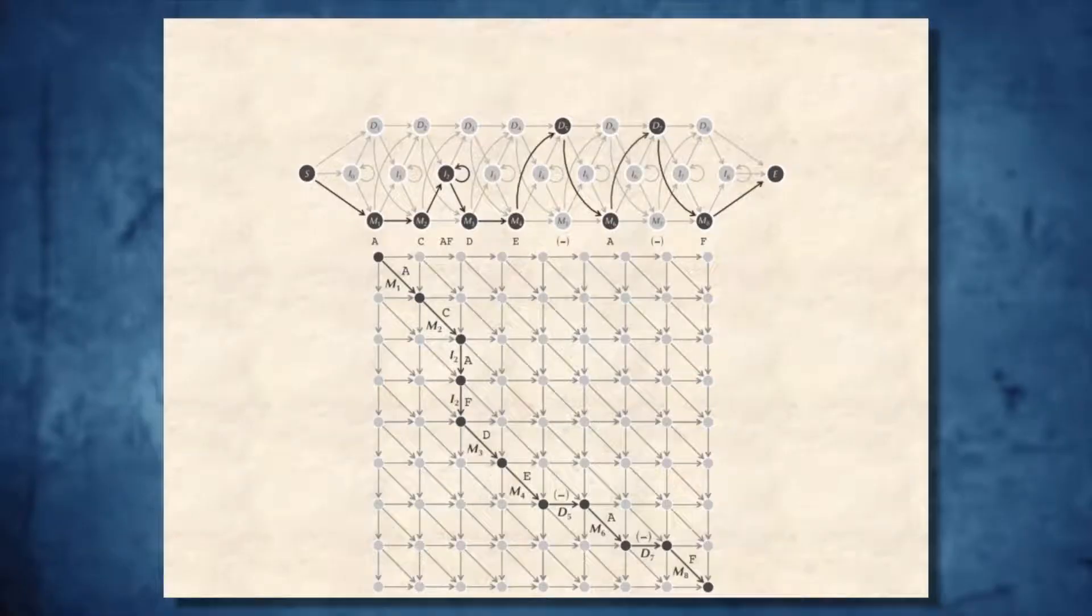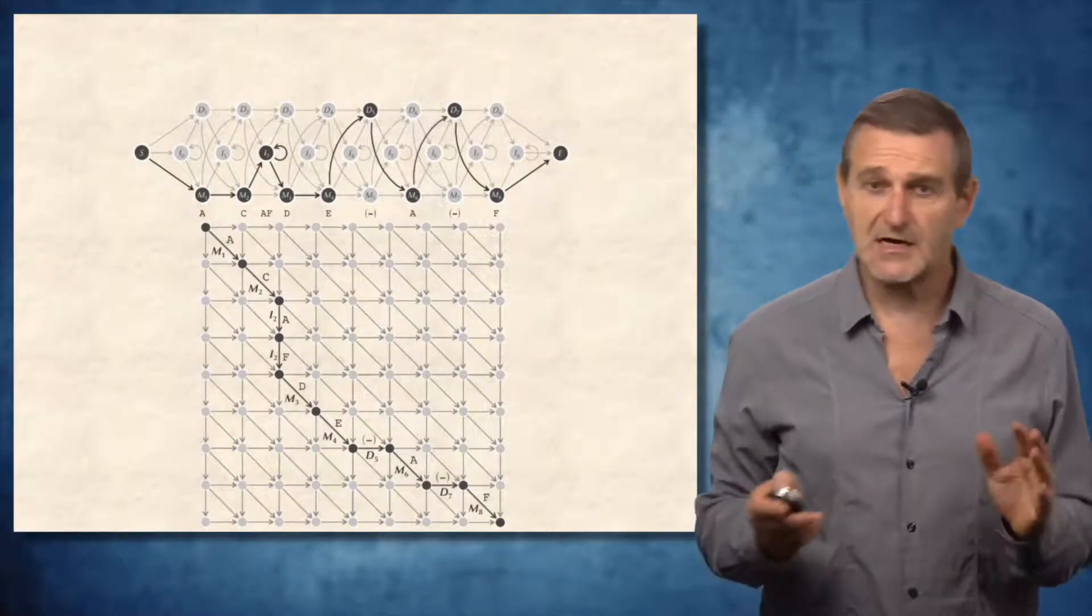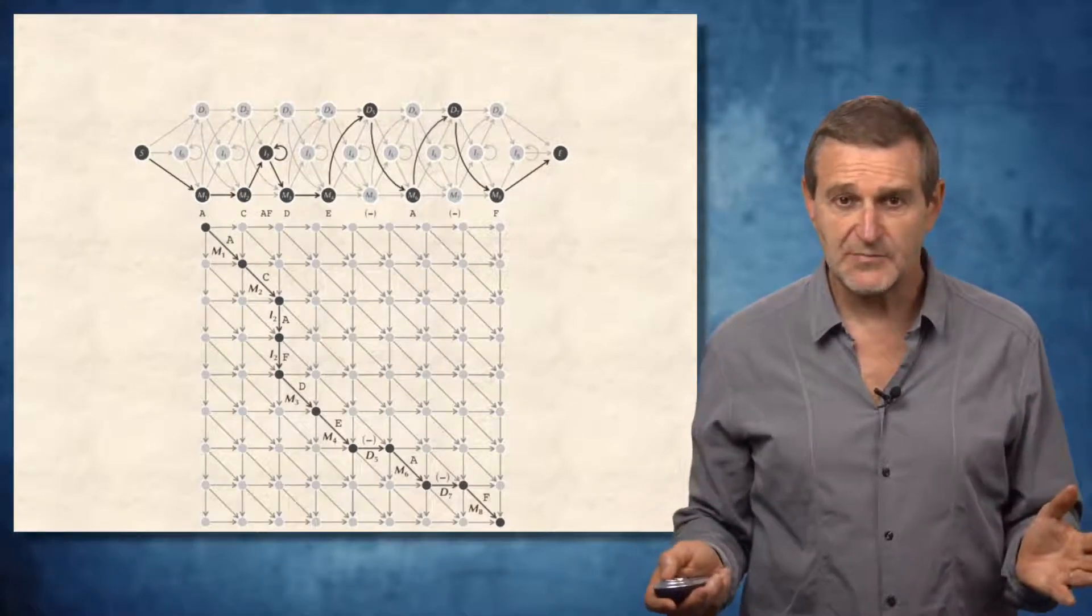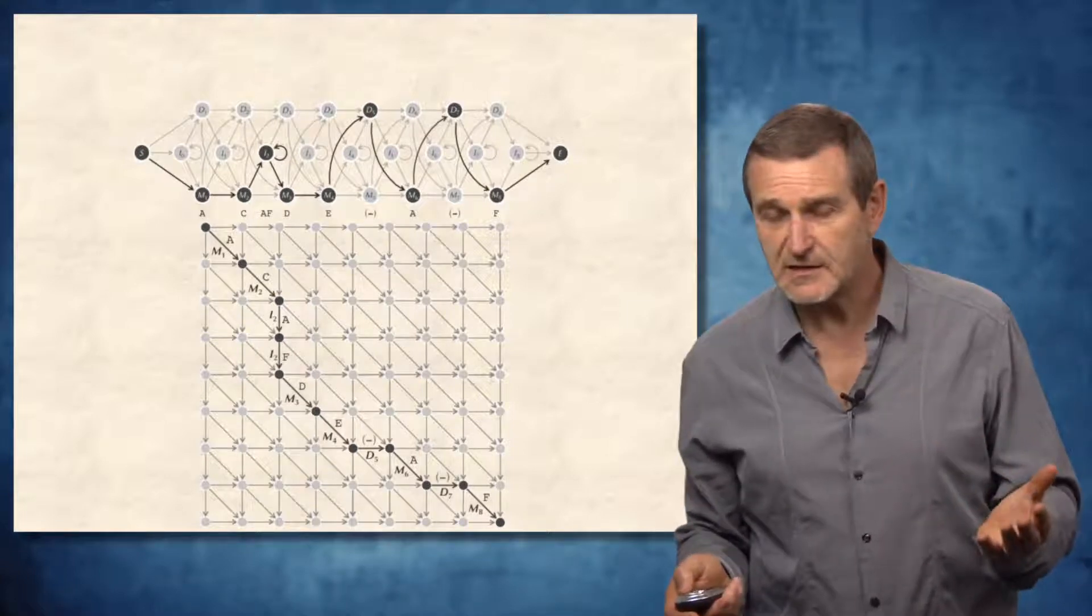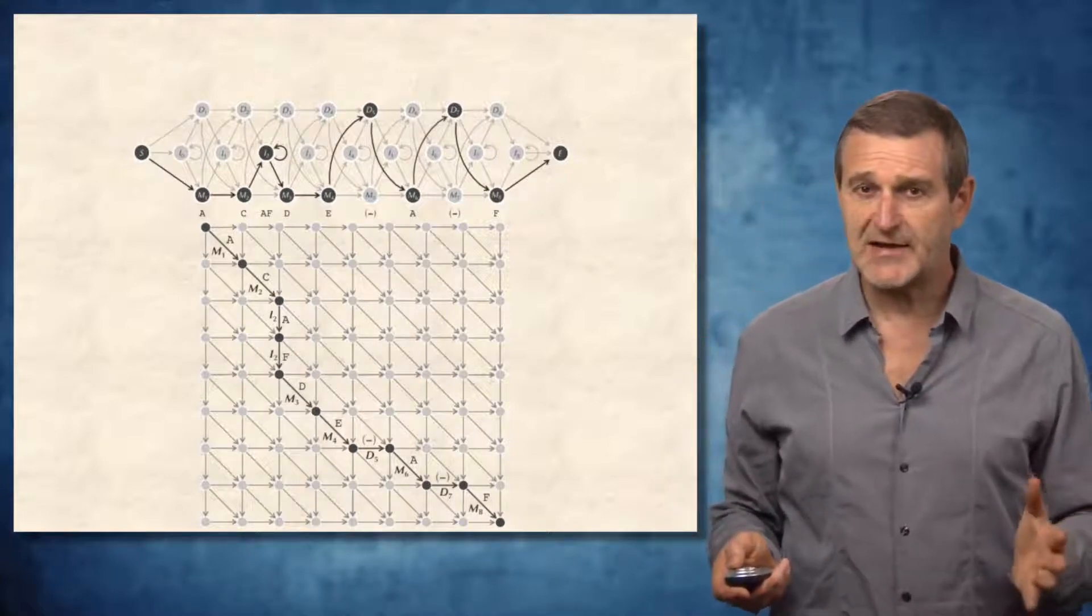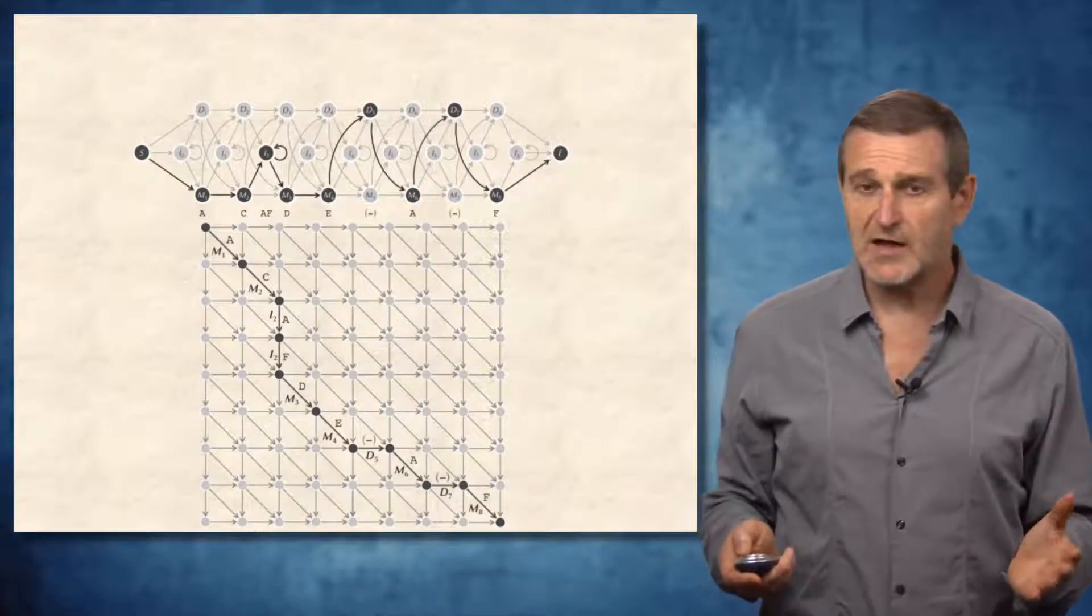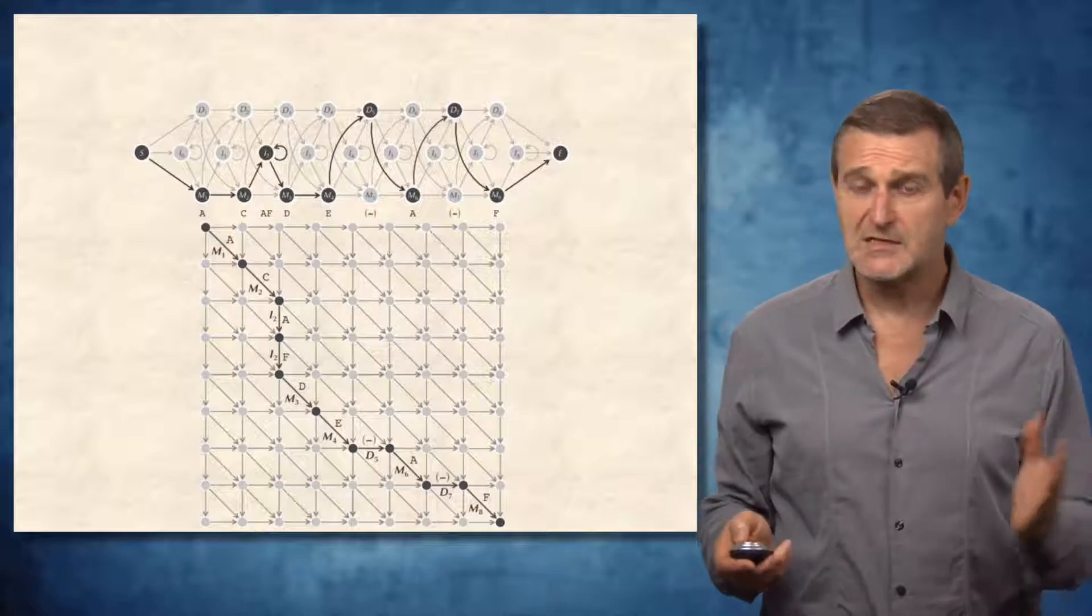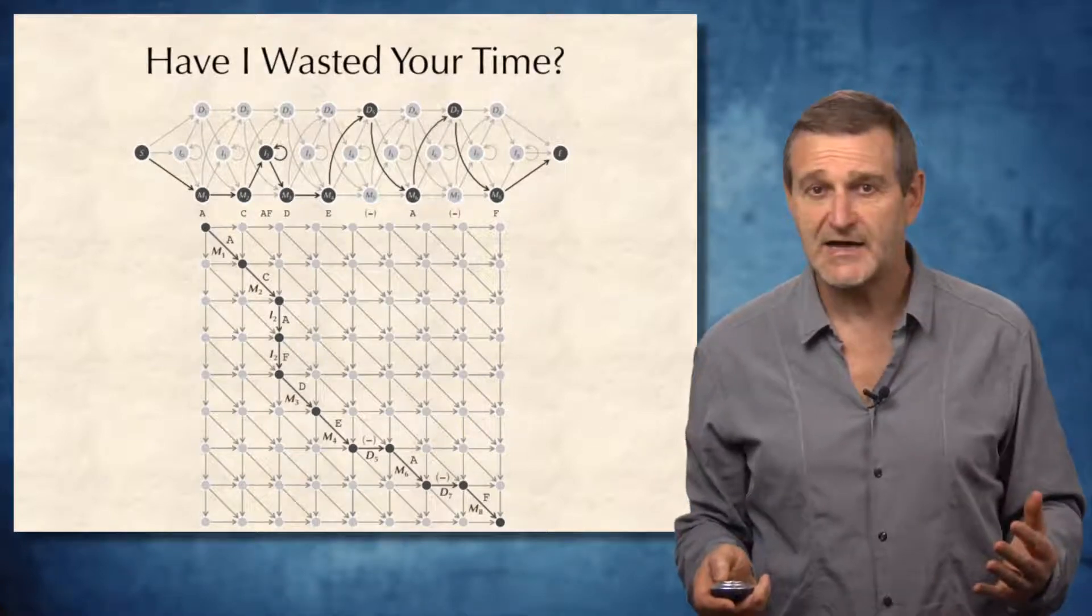Let's take a look at the hidden path constructed in the HMM diagram. And of course, this hidden path corresponds to a path in the usual alignment graph that we considered before. The question then arises: we just described a rather complex decoding algorithm for constructing the hidden path in the HMM. But wouldn't it be easier to just construct the same alignment path using the traditional alignment technique? Or in other words, have I wasted your time?